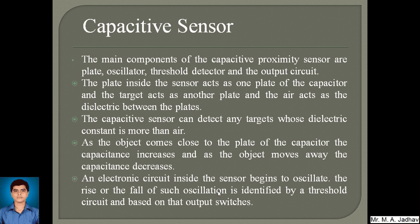The main components of a capacitive proximity sensor are a plate, an oscillator, a threshold detector, and an output circuit. The plate inside the sensor acts as one plate of a capacitor, the target acts as the other plate, and air acts as the dielectric between the two plates. As the object comes close to the plate, the capacitance increases; as the object moves away, the capacitance decreases. An electronic circuit inside the sensor begins to oscillate, and the rise or fall of these oscillations is identified by a threshold circuit which switches the output.